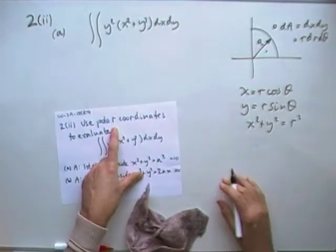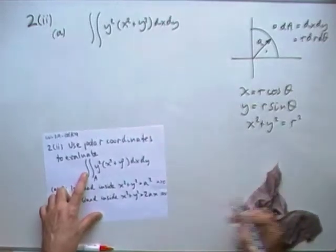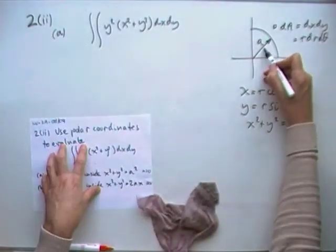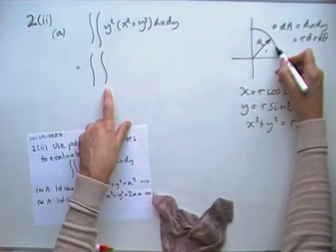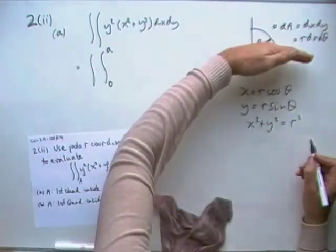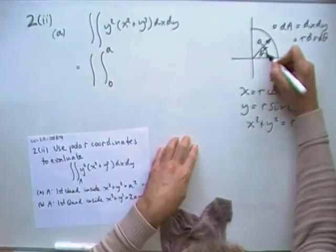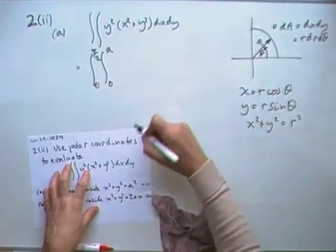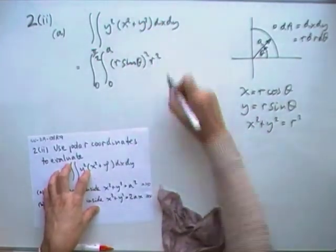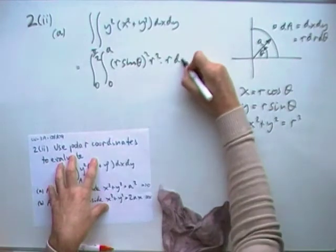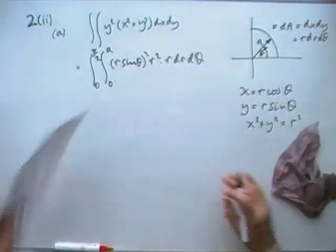So going back over to here then, we've got the radius is going to go from 0 to a. And the angle, the angle theta, is going to go from 0 to pi upon 2. y squared will be that r sine theta squared. And x plus y squared, x goes to y squared, it's r squared. And then the area element, r, dr, d theta.